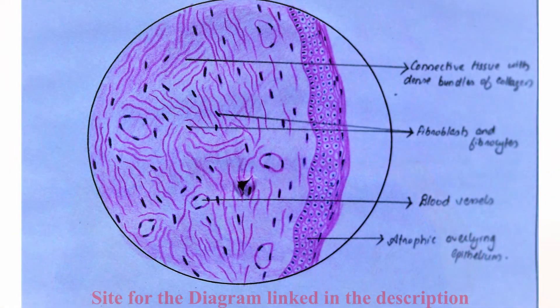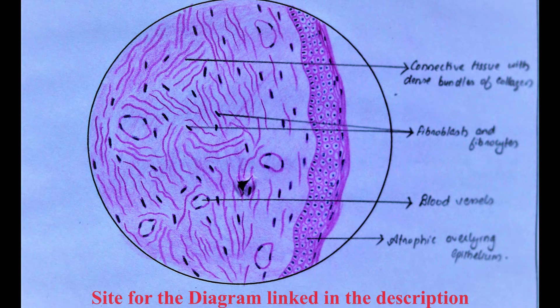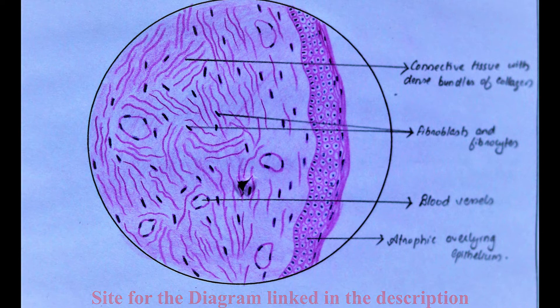Looking at the histopathology diagram: the stroma of fibroma consists of bundles of interlacing collagen, predominantly type 2 and type 3 collagen. Interspersed within these bundles are varying amounts of bipolar fibroblasts with plump nuclei — spindle-shaped cells with a big prominent nucleus. Between the collagen are also found fibrocytes — slender cells with thin elongated nuclei, the mature fibroblasts. If the lesion is young, it is predominantly vascular; if mature, it is predominantly fibrous — less cellular and more fibrous. Inflammatory cells may be present or absent.